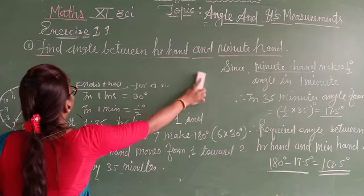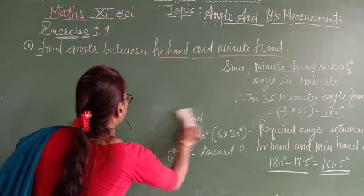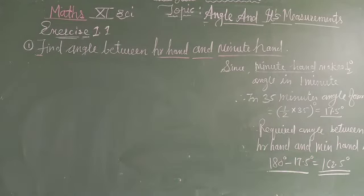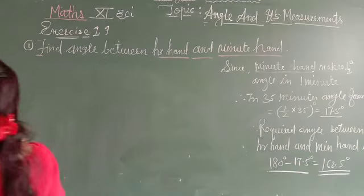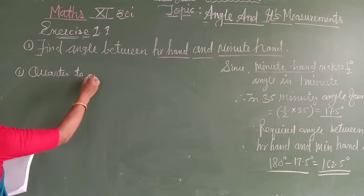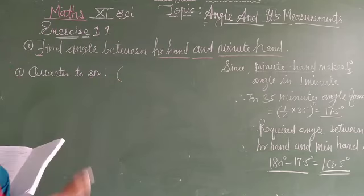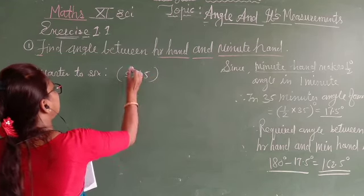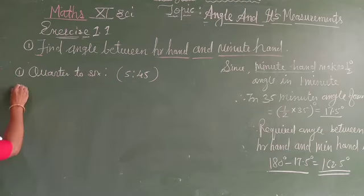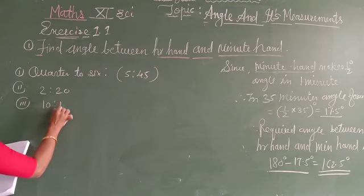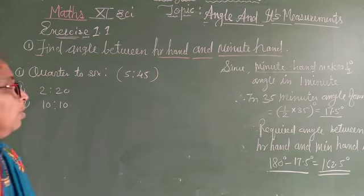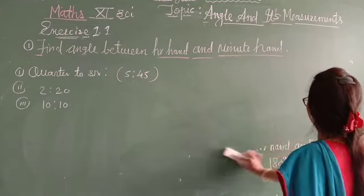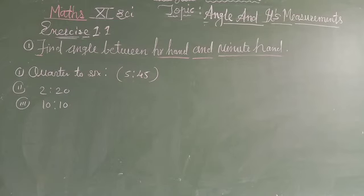Hope you understood the calculation. Now I am giving you some examples to solve at home: quarter to 6, 2:20, and 10:30. Try to solve these examples yourself to find the required angles.